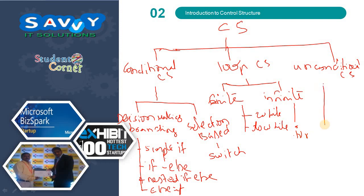Unconditional control structures are break, continue, and go to.